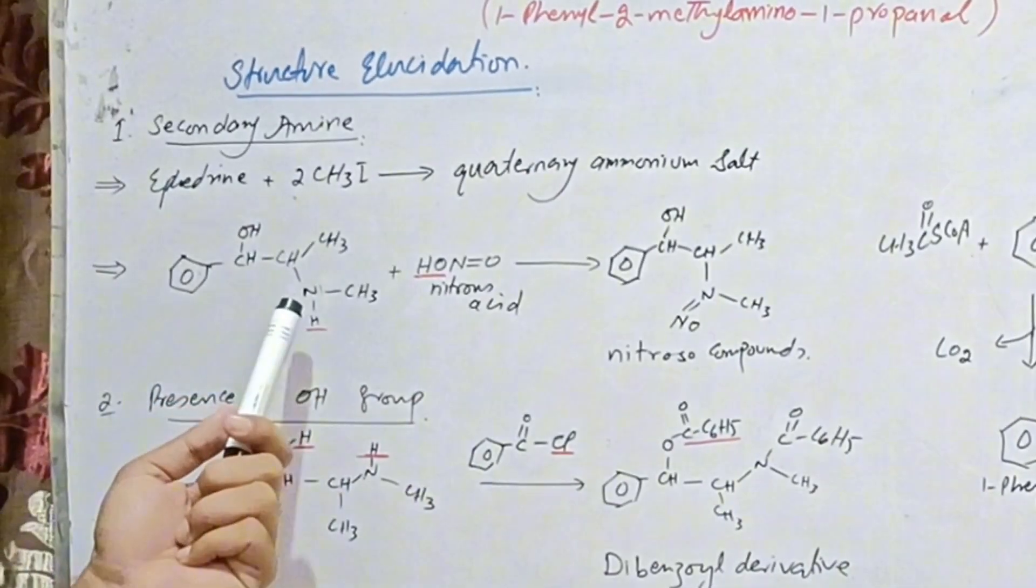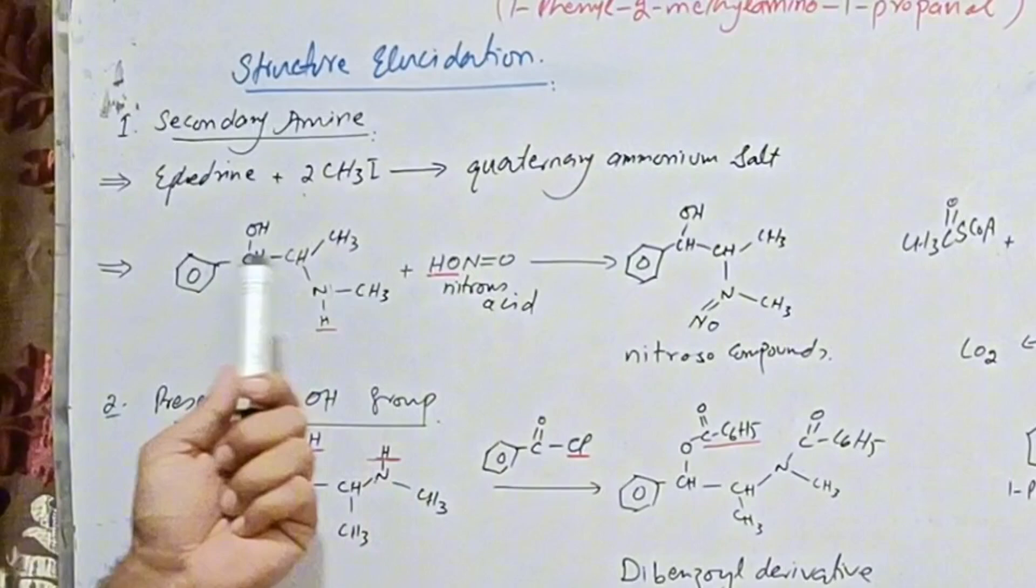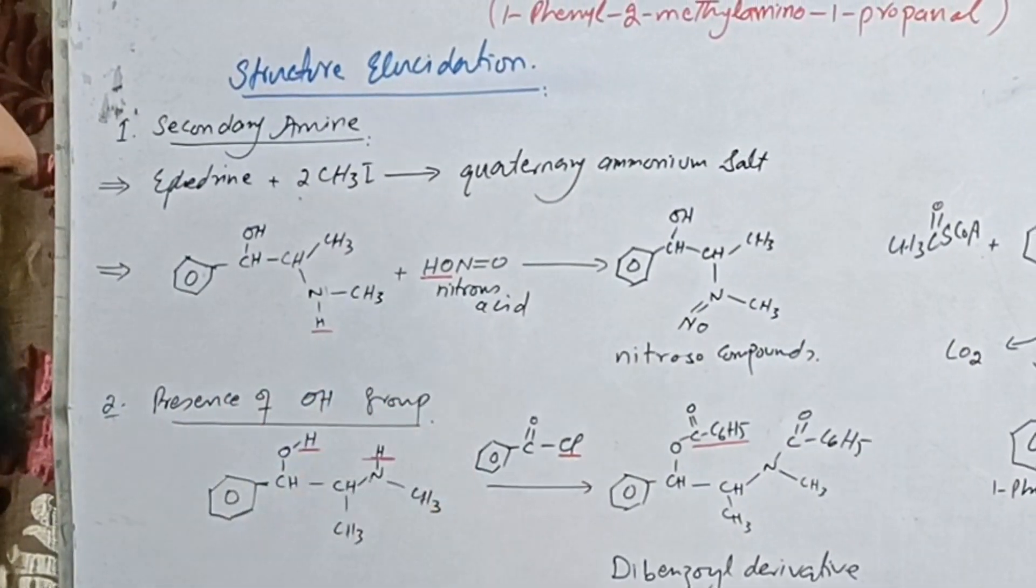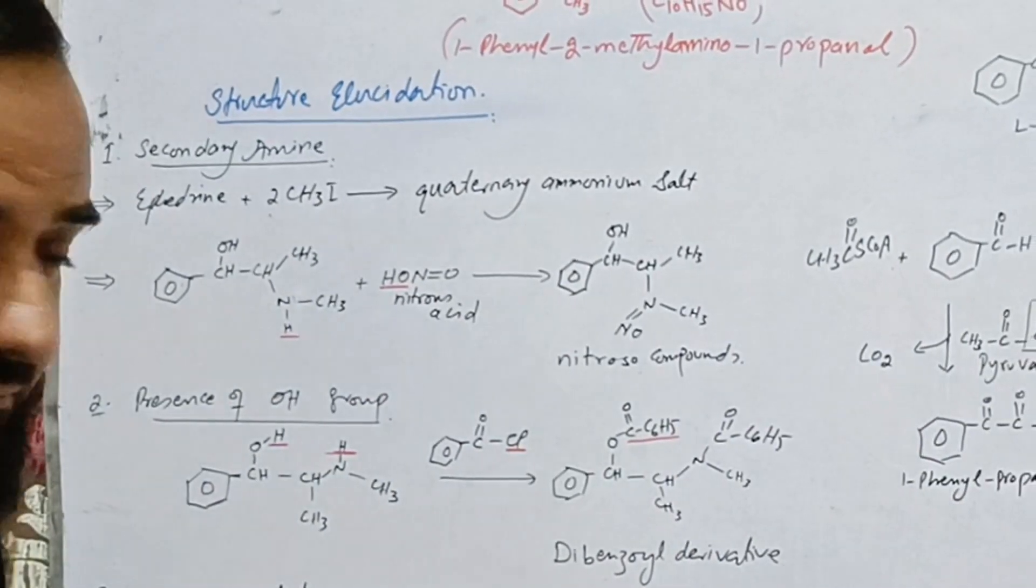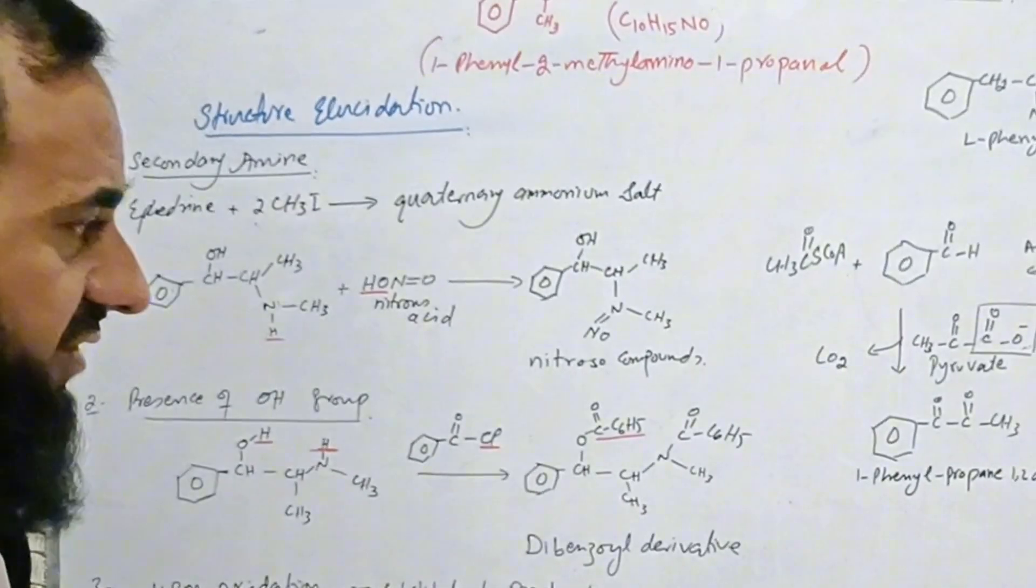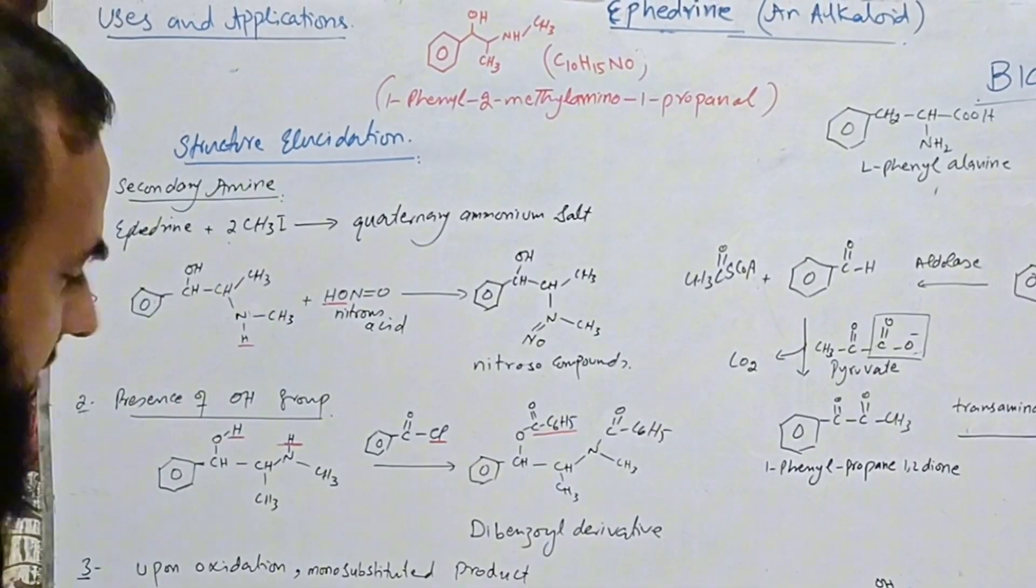Another way we can find that nitrogen is secondary: we treat ephedrine with nitrous acid, and we get nitroso compound. This is another evidence or proof that the ephedrine contains secondary nitrogen.